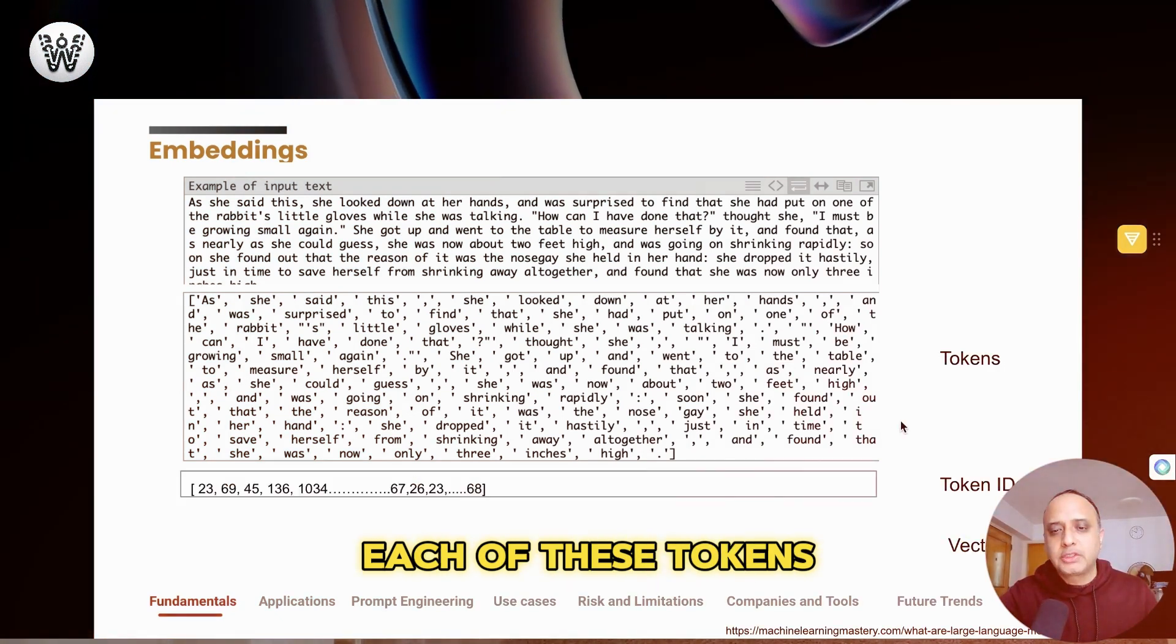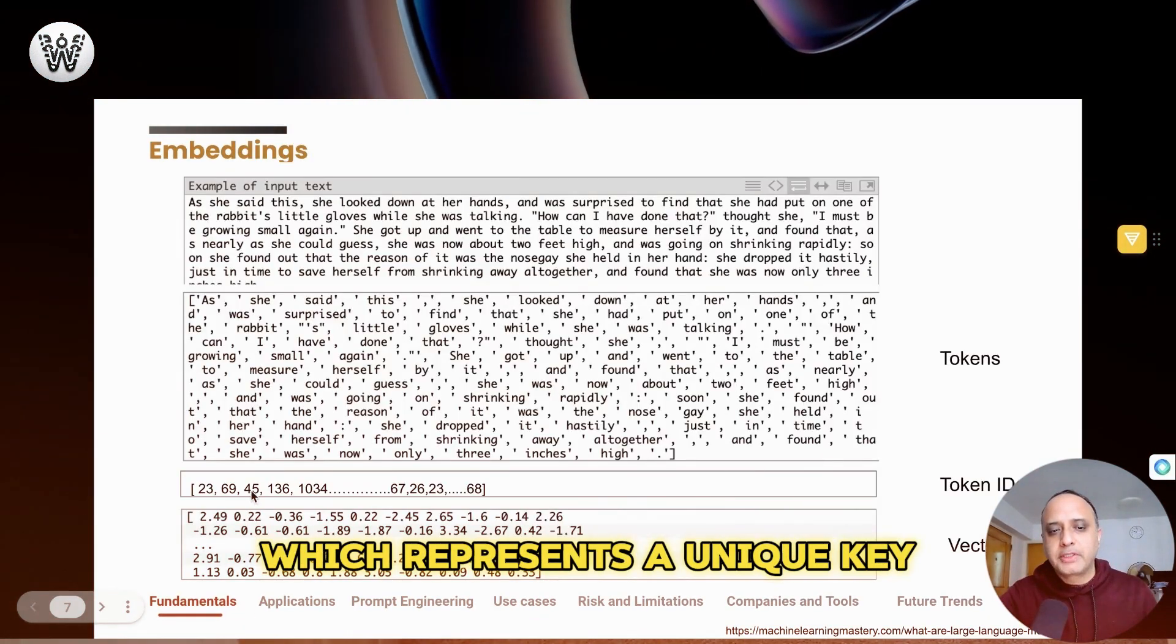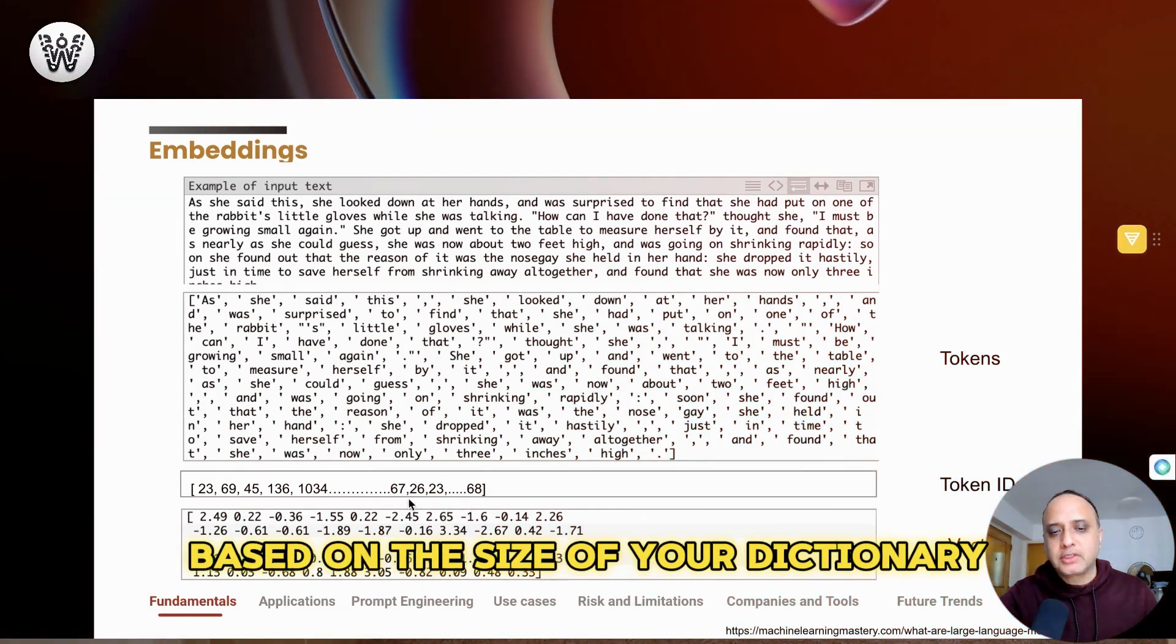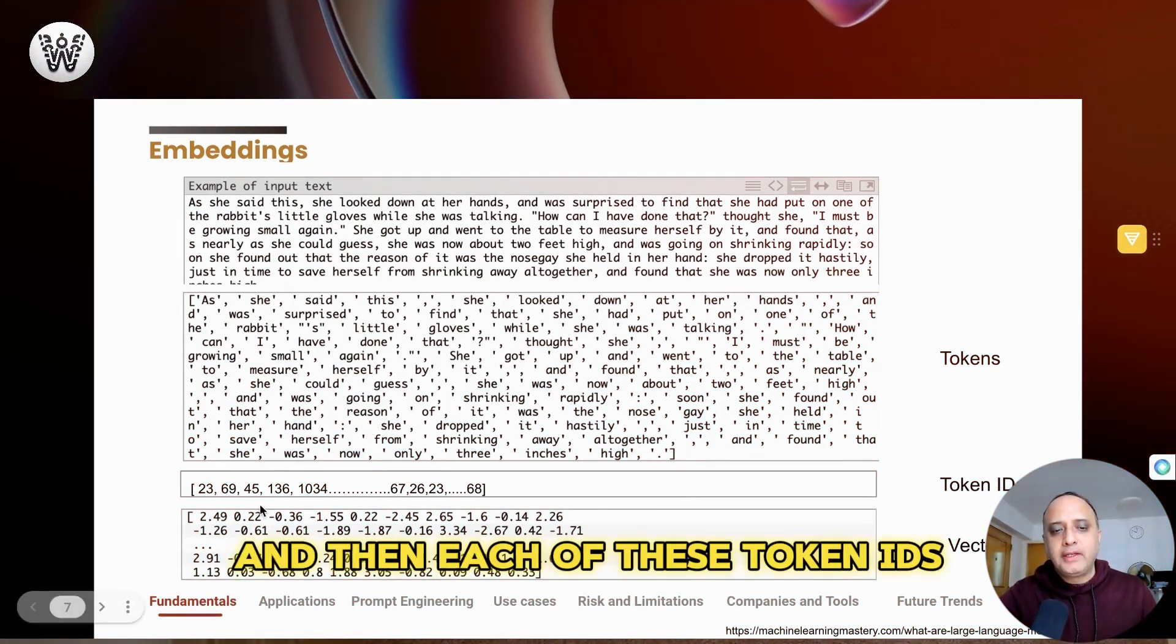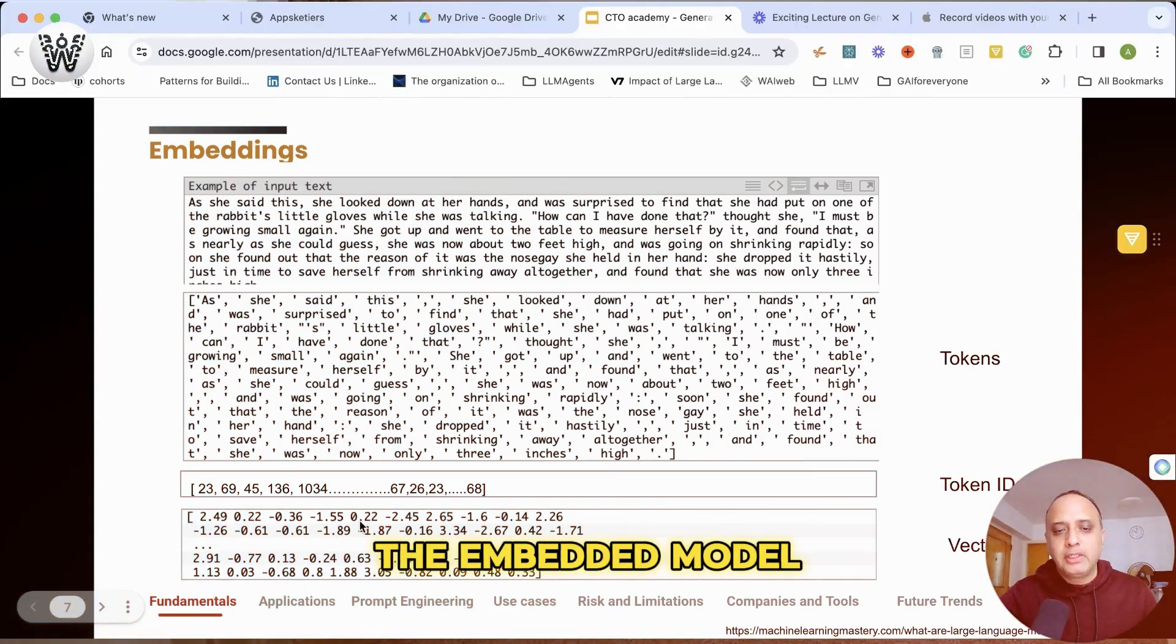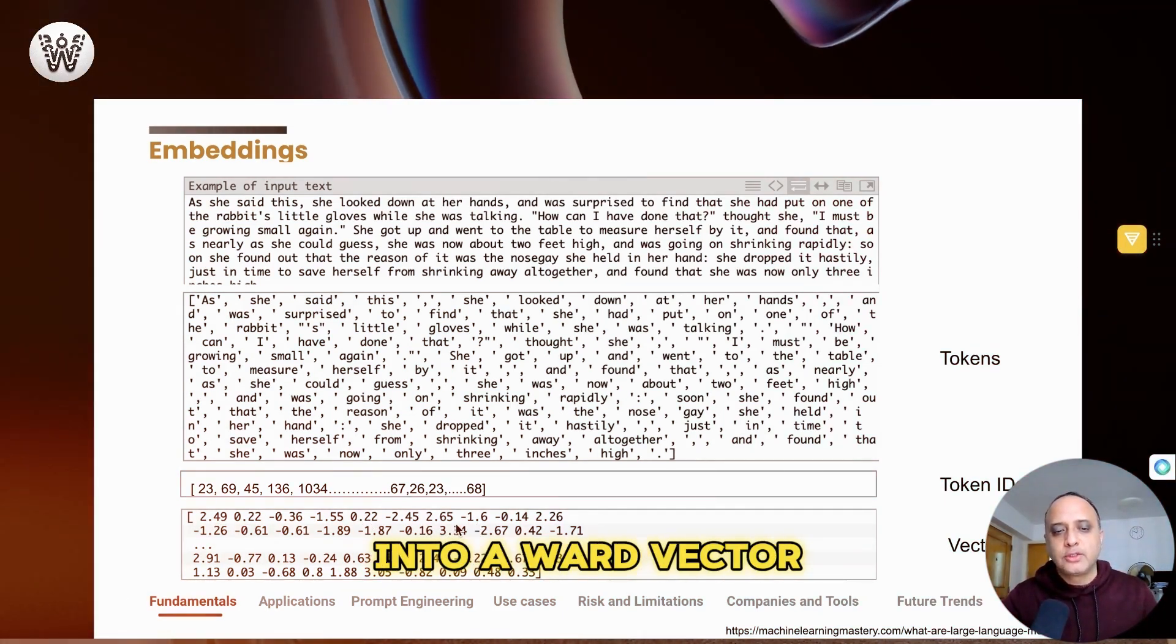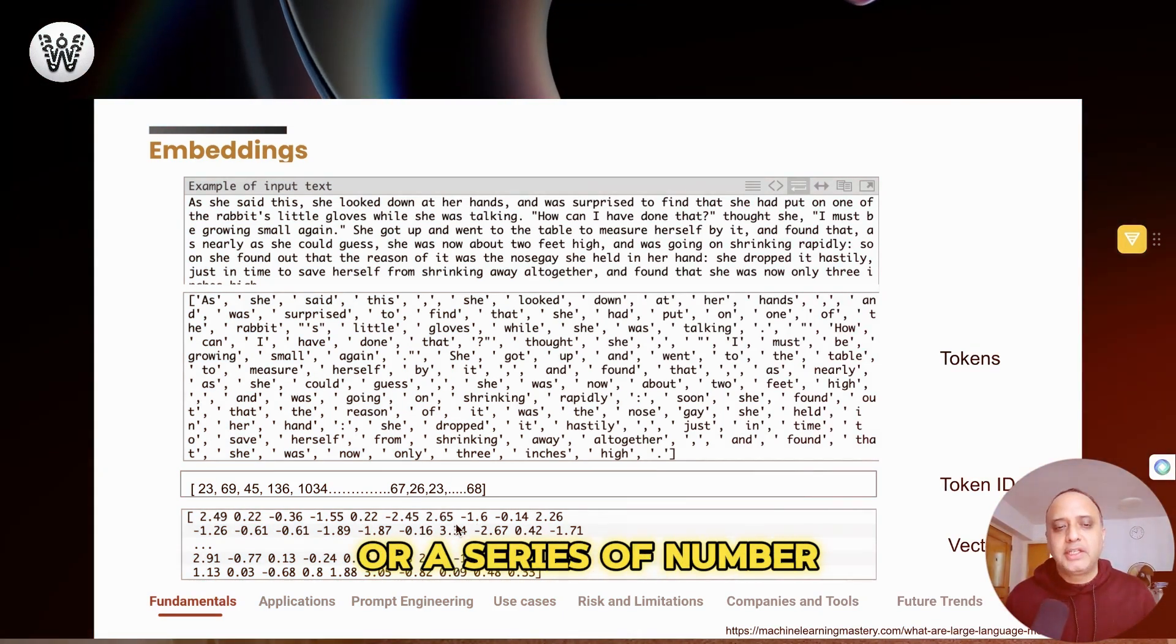Each of these tokens is then given a token ID which represents a unique key based on the size of your dictionary. So every token is represented by a unique token ID, and then each of these token IDs, with the help of the embedding model, then gets converted into a word vector or a series of numbers.